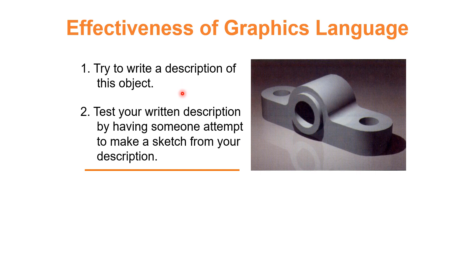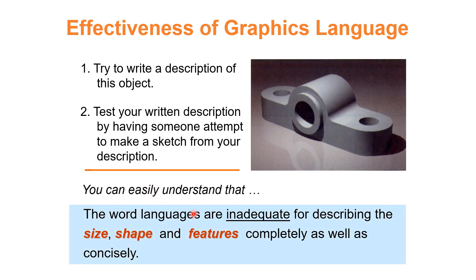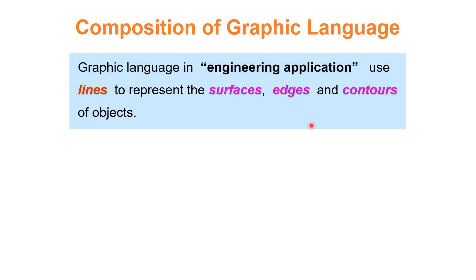Test your written description by having someone attempt to make a sketch from it. When you complete the description, give it to another person and ask them to make a sketch. You can easily understand that word language is inadequate for describing size, shape, and features completely and concisely — word language has limitations.